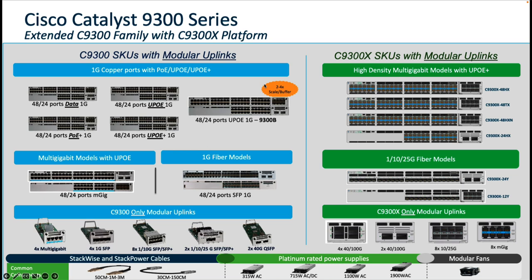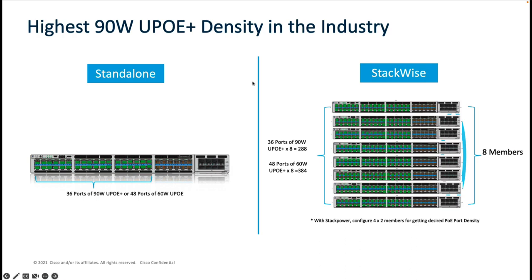On the fiber models, there are variants available in 12 and 24Y form factors capable of 10G and 25G on the downlinks. The 9300X comes with new higher bandwidth uplink options ranging from 1G all the way to 100G. To ensure investment protection, customers can leverage the same StackWise cables, stack power cables, power supplies, and modular fans from the existing Catalyst 9300 family.